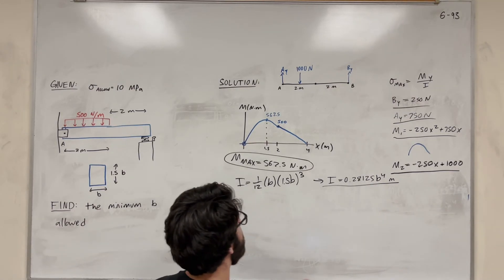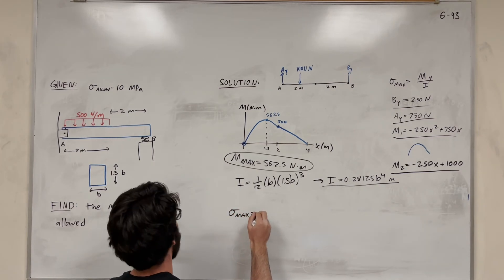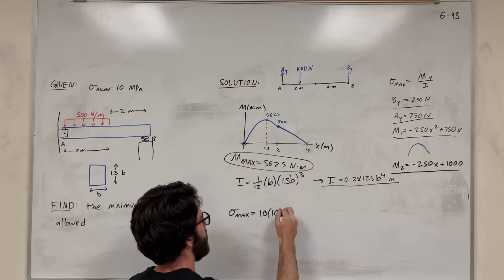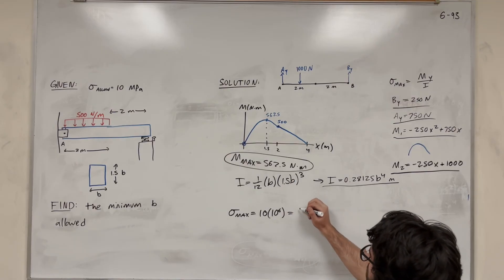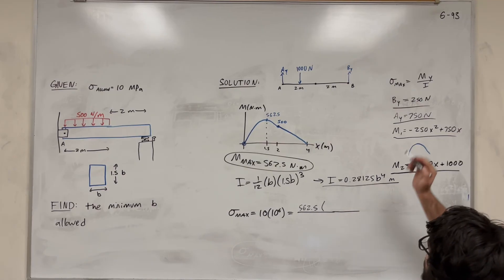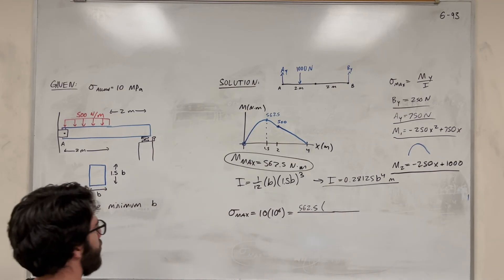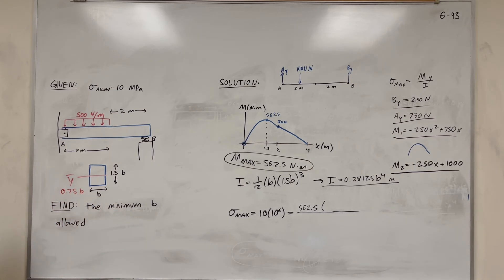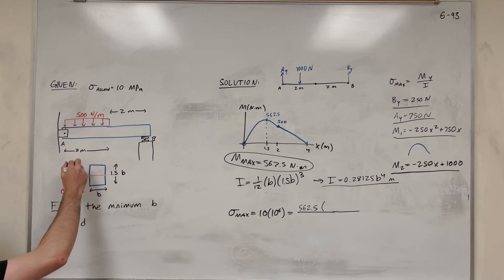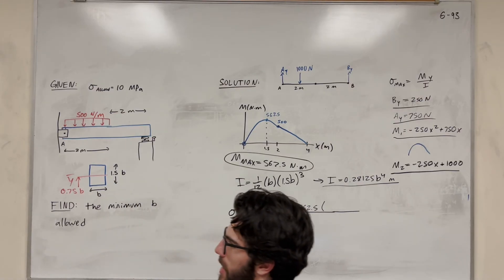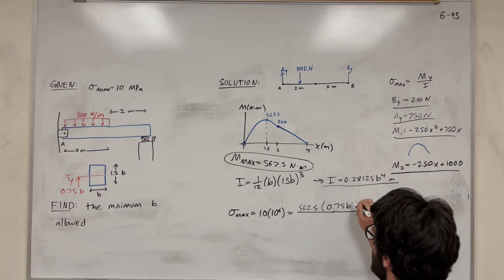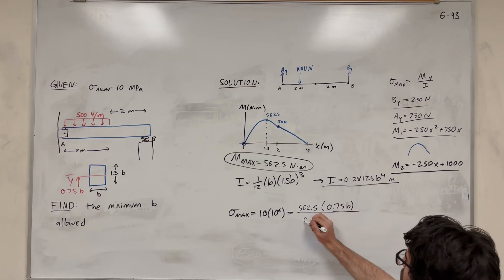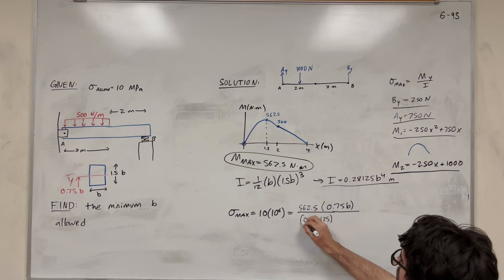Now we plug everything into the bending stress equation. Maximum bending stress = 10 MPa = 10 × 10⁶ Pa. The moment is 562.5 N·m. The value Y is the furthest distance from the centroid — half of 1.5B — so Y = 0.75B. The moment of inertia is 0.28125B⁴. So: 10 × 10⁶ = (562.5 × 0.75B) / (0.28125B⁴).